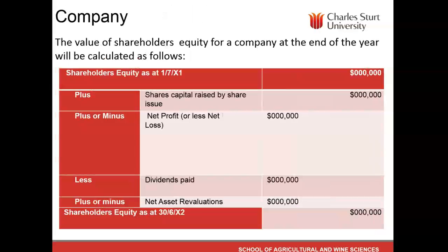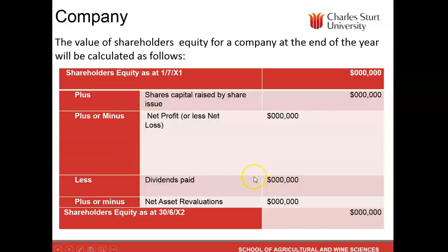For a company structure, the equation remains the same but the names of things are slightly different. Instead of capital introduced, we have capital raised by share issue, though this is unlikely during the lifespan of your plan. Net profit or loss works as explained earlier. Instead of drawings, we have dividends paid, because that's how companies distribute their profit. And we also have the net asset revaluation as before.